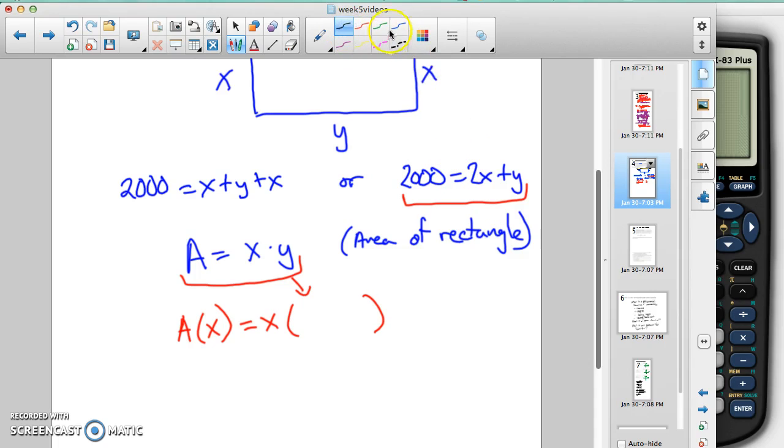So in this equation up here, we know that 2,000 equals 2x plus y. That means if I subtract my 2x from both sides, and I get 2,000 minus 2x equals y.